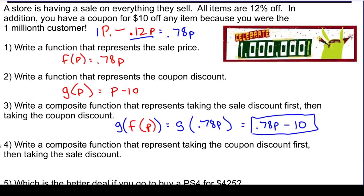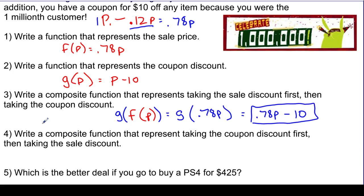For the second composition, we do the opposite: take the coupon off first, then take the percentage off that result. The coupon discount is g of p, so we start with g of p and then plug that answer into the percent-off function f. So we're computing f of g of p, which becomes f of p minus 10.